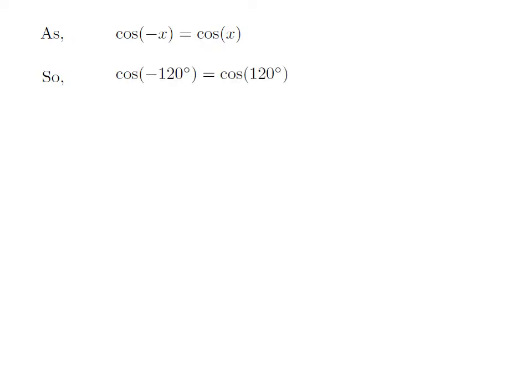Let us apply the above identity for cosine of minus 120 degree. Here, x is 120 degree. So, cosine of minus 120 degree is equal to cosine of 120 degree.